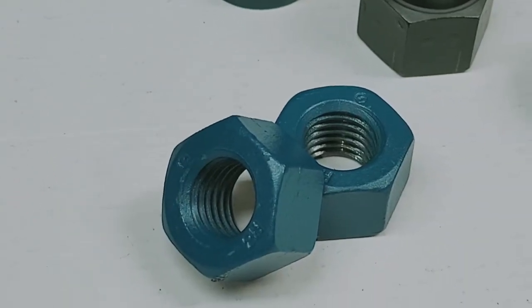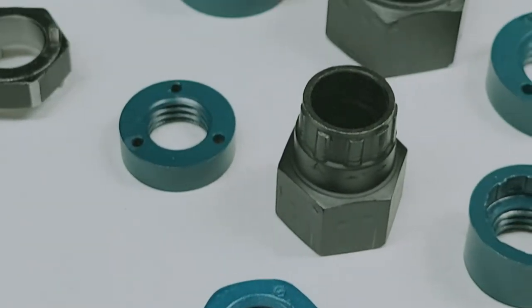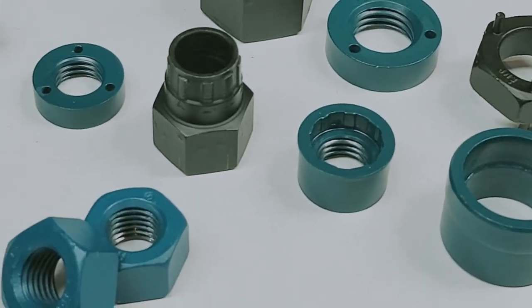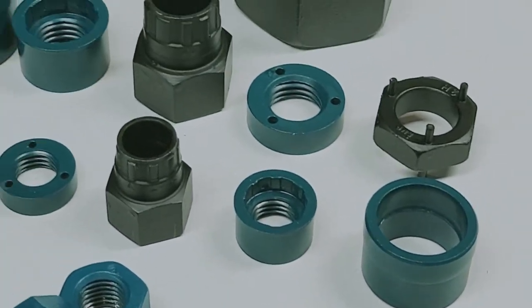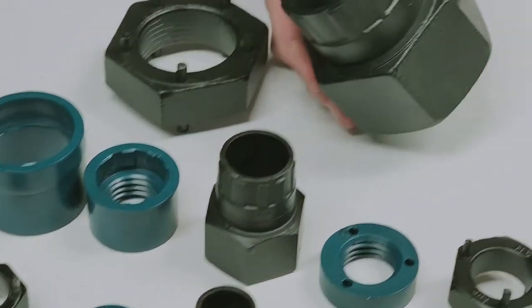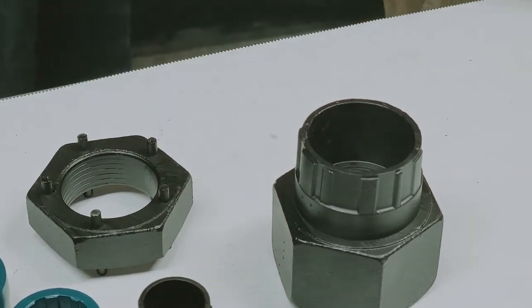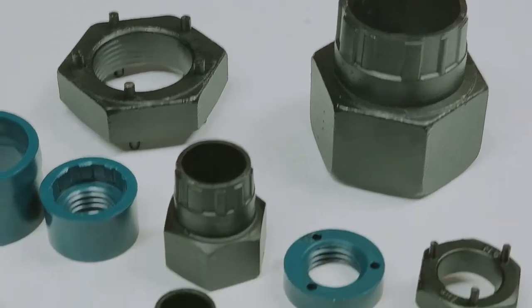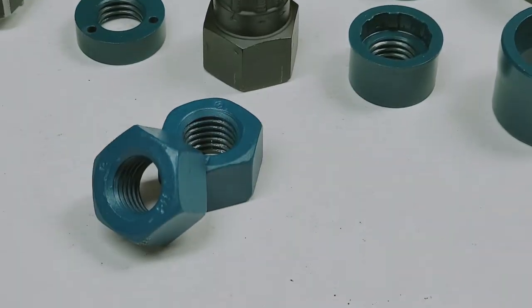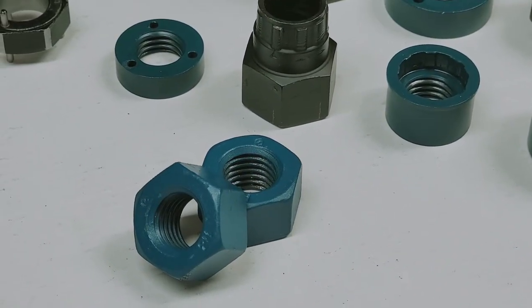Though some of the 2H nuts you use are three-quarters, most of them are much bigger than that. Our pipeline nut range goes from small to very big, all the way up to 2 inches in diameter. If you have a 2 inch nut, we can make a pipeline nut for that. If you have a three-quarter or even a five-eighths, we can make a pipeline nut for that.